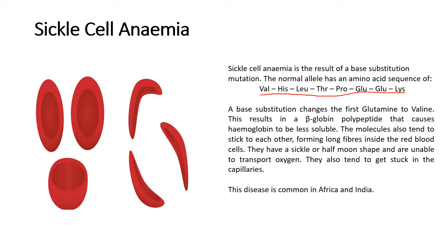The normal allele has an amino acid sequence including valine, histidine, leucine, threonine, proline, glutamine, glutamine, and lysine — not that you need to memorize that for the exam. Whenever you have a base substitution in this gene that codes for the shape of red blood cells, the first glutamine is changed to valine. The problem with this is that valine is a hydrophobic amino acid, which means it doesn't like water, and it changes the shape of the red blood cells.